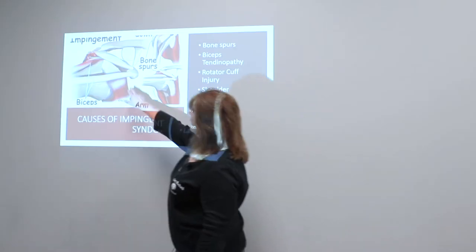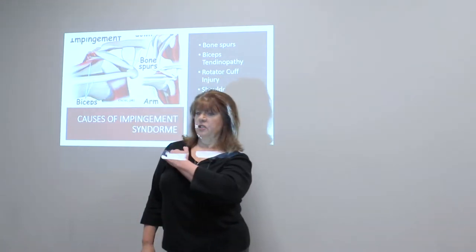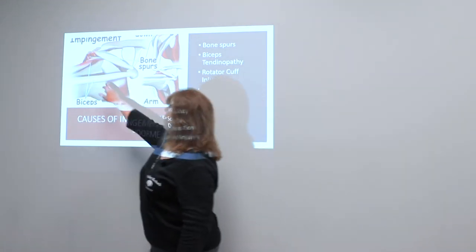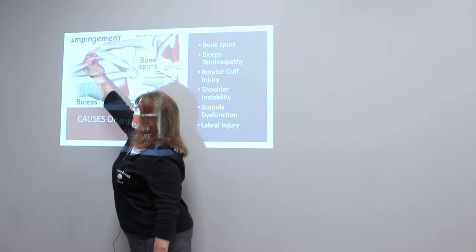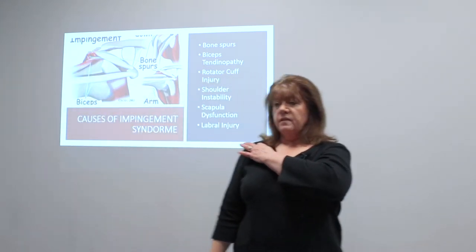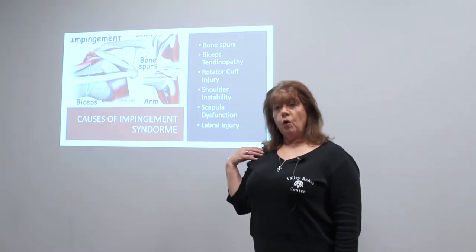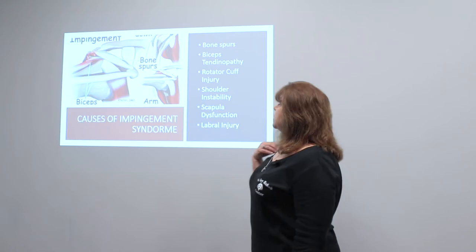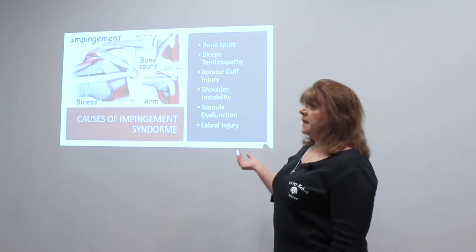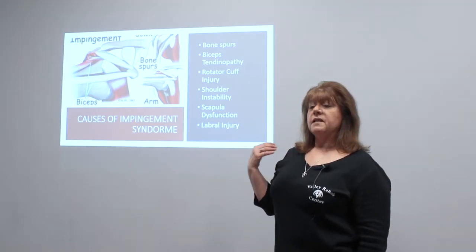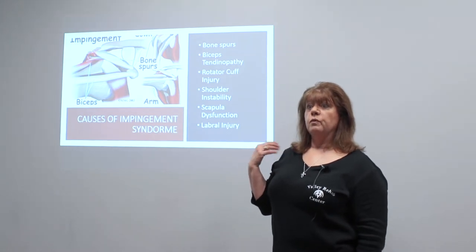A lot of people come to us and say they were just doing yard work — raking leaves or doing a lot of work — and they were using their biceps a lot. What happens is the biceps muscle sends a tendon that attaches in the front of the shoulder, and it also has another head that attaches right at the acromion process and the AC joint. If that area gets swollen and inflamed from overuse, you have a tendinopathy of the biceps muscle.